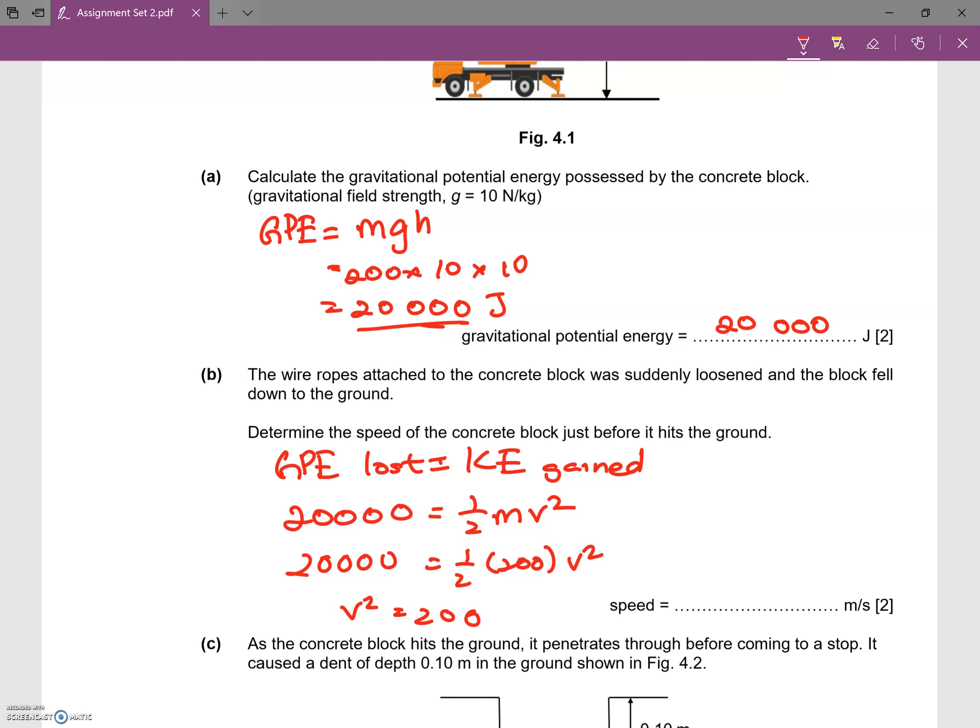And if you do your math, you realize v equals square root of 200. So this will be equivalent to 14.1 meters per second.